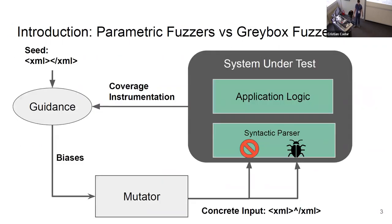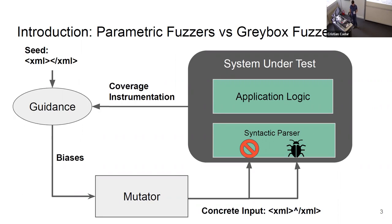The most widely used approach to finding bugs in applications at scale is gray box fuzzing. I'm not going to go too into this because you're all probably familiar, but modern gray box fuzzers, such as AFL and libFuzzer, target native binaries. And they're pretty good at finding bugs in syntactic parsing — kind of shallow bugs — but not necessarily in logic stages beyond that point.